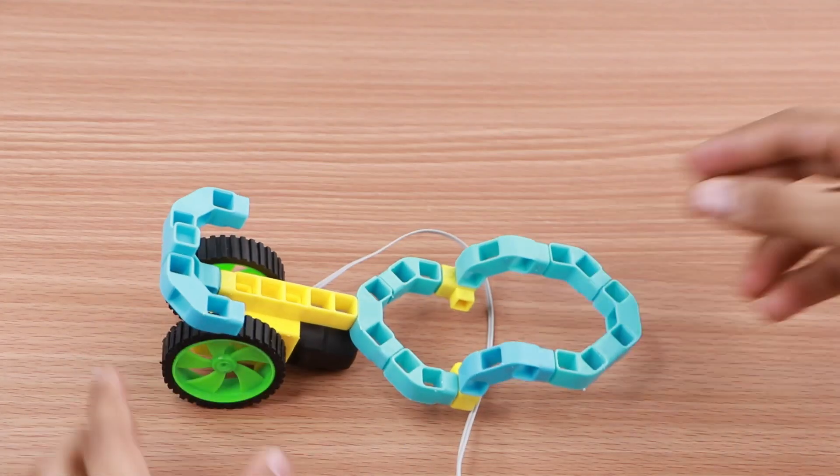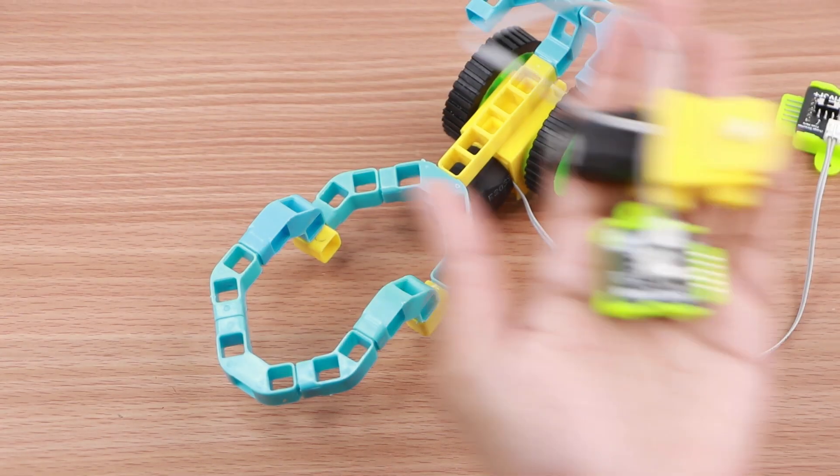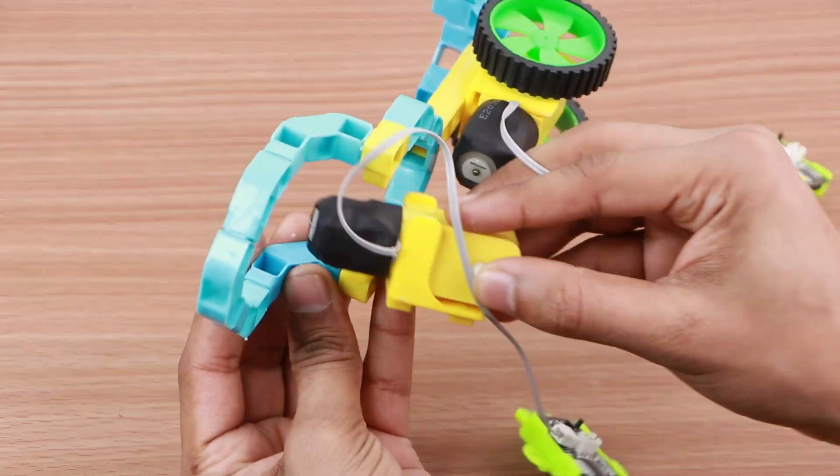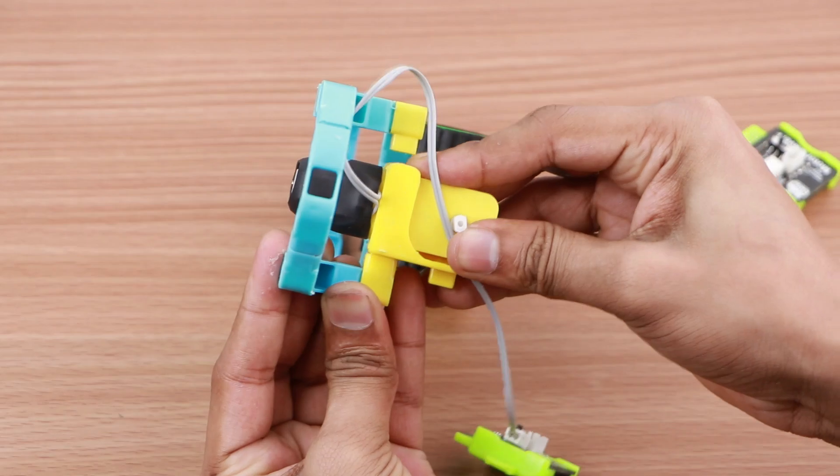Now take another motor and driver blocks. Attach this motor to the base such that the shaft is facing towards the front of the Whitmobile.